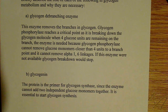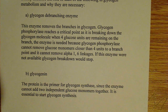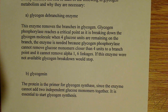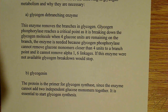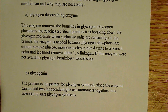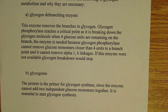What the de-branching enzyme does is remove the branches in glycogen. That's important because glycogen phosphorylase reaches a critical point as it's breaking down the glycogen molecule when there are four glucose units remaining on a branch. Glycogen phosphorylase is breaking down glycogen and releasing glucose into the blood, but it reaches this critical point where it can't remove those final four glucose monomers, and it can't remove them closer than four units to a branch.